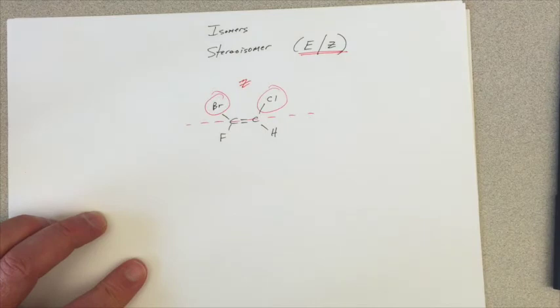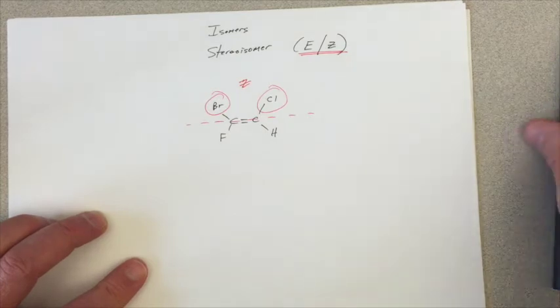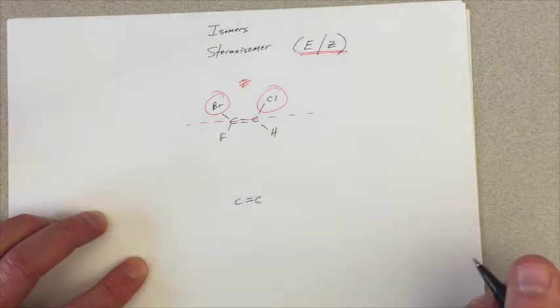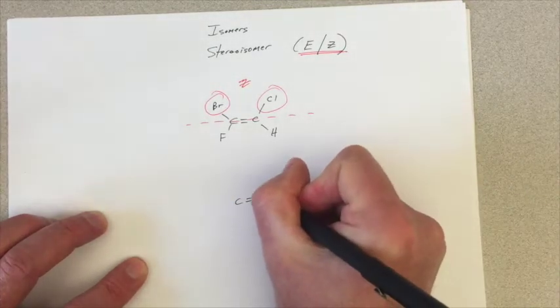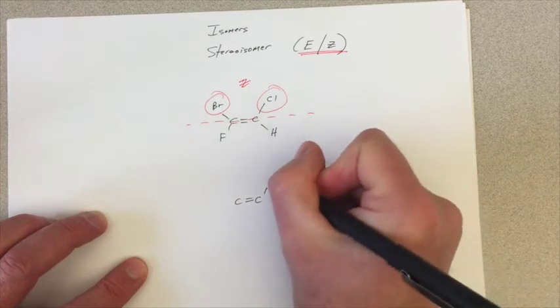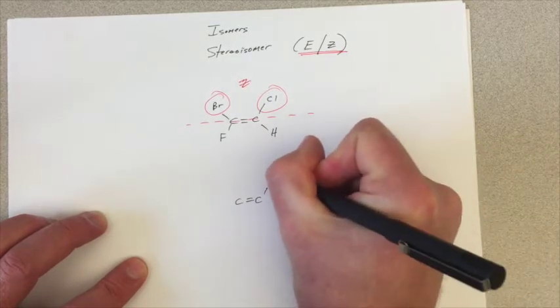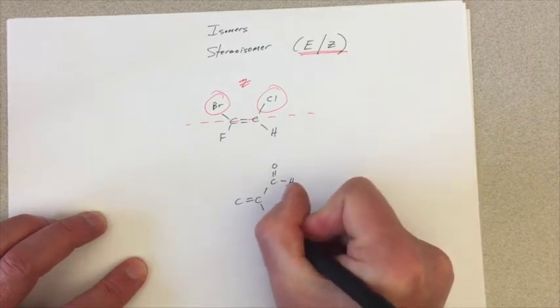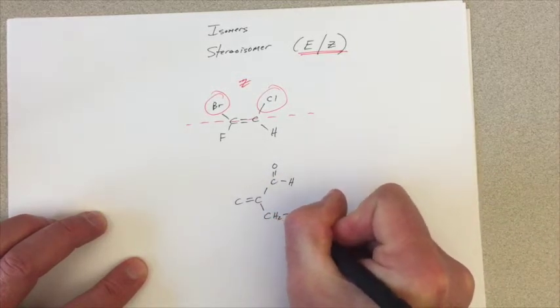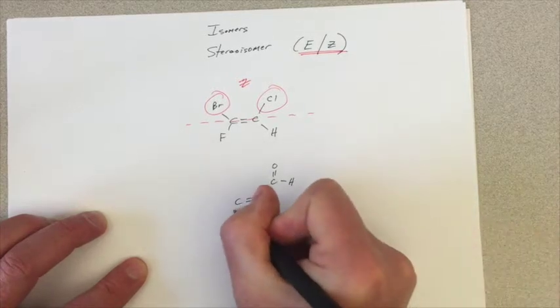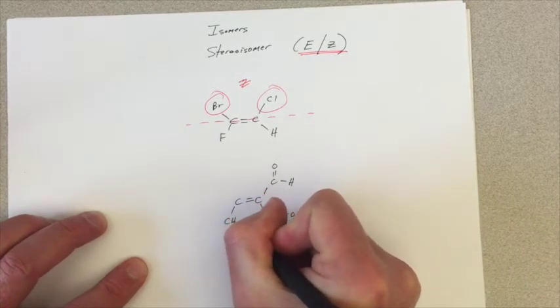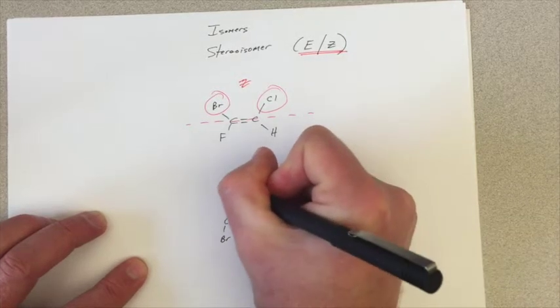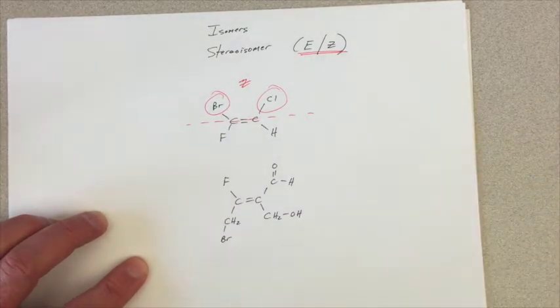Okay. Now, let's do something a little more complicated. We'll have our double bond here. There. And let's put something like this in play, and then in here CH2 and a fluorine. Okay.